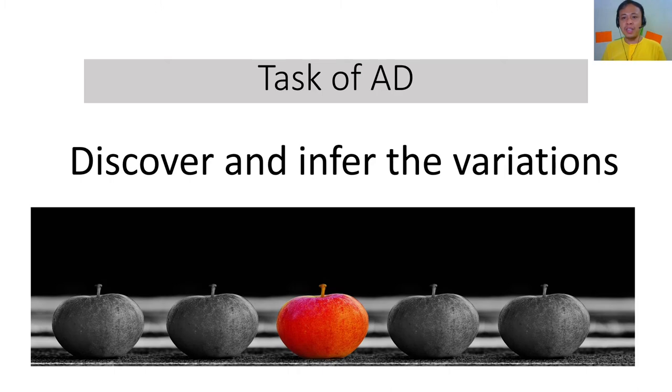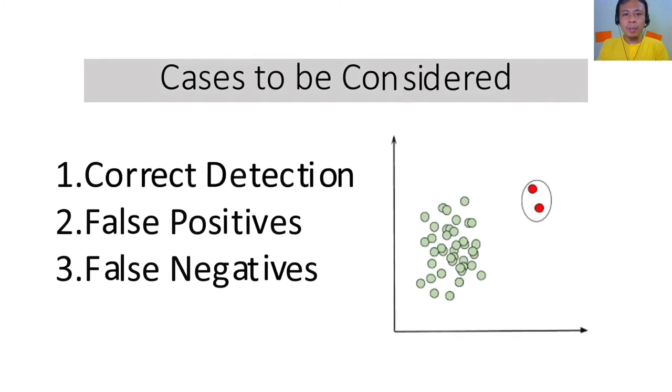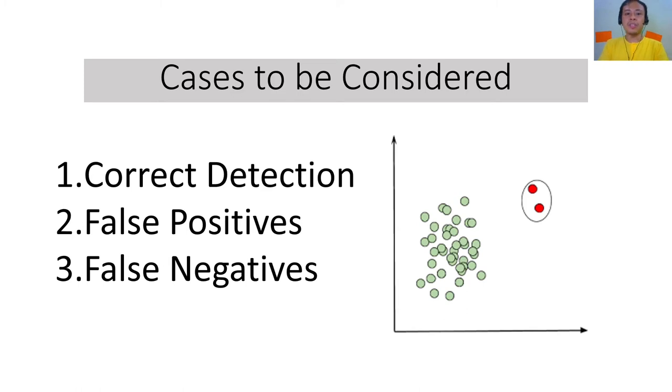In applying the anomaly detection algorithm, we have to think of three possible cases. These three possible cases would help us evaluate the correctness of our identification. First is correct detection, second is false positives, and third is false negatives.